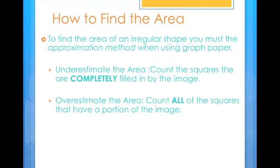Next, you will overestimate the area of the image. You will do this by counting all of the grid squares that contain any portion of the image. After you do this, you will find the average of the two areas.